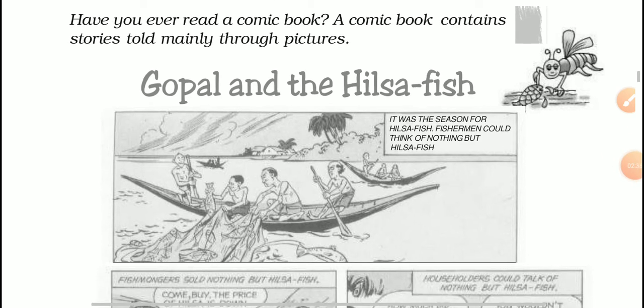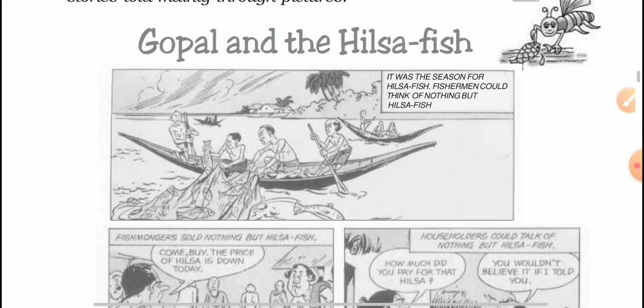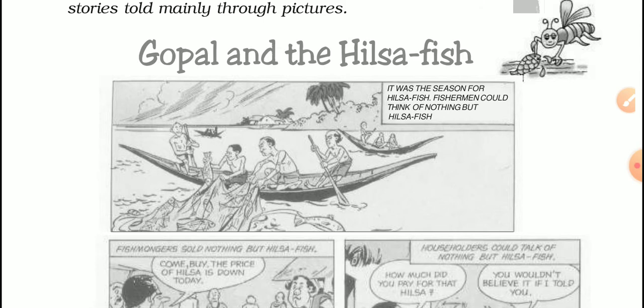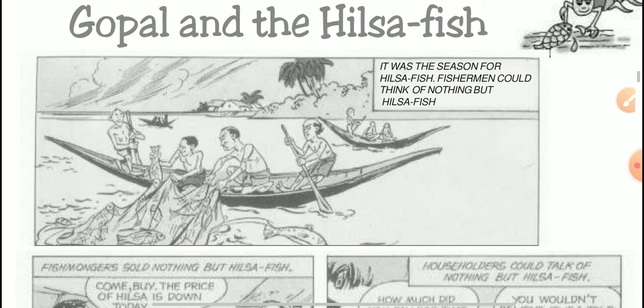Open your books. At the beginning of the story, as you can see, it is written in a comic strip manner. The story starts with a picture of a river where some fishermen on a boat are catching fish. Can you guess which fish they are catching? Obviously, according to the story, it is Hilsa fish. It was the season for Hilsa fish; fishermen could think of nothing but Hilsa fish.